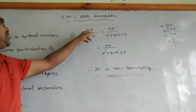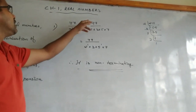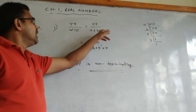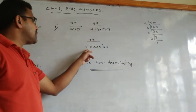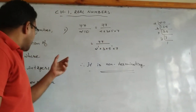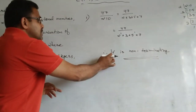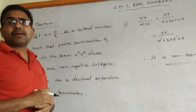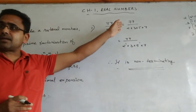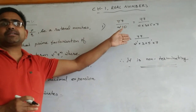Next question: 77/210. We prime factorize the denominator 210 = 2 × 3 × 5 × 7, which can be written as 2¹ × 3 × 5¹ × 7. This cannot be expressed in the form 2ᴺ × 5ᴹ because of the factors 3 and 7. Therefore it is non-terminating. After prime factorizing the denominator of the given numbers, we can determine whether the decimal expansion terminates or not.